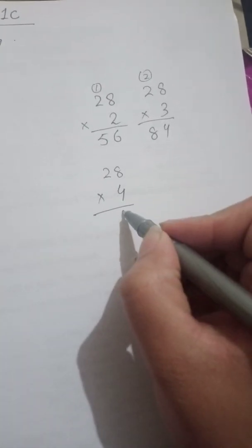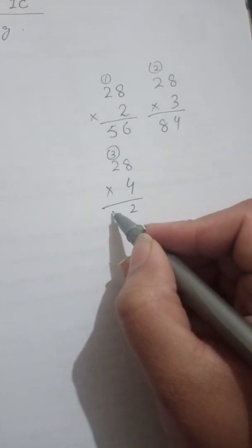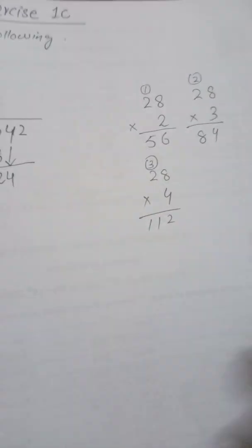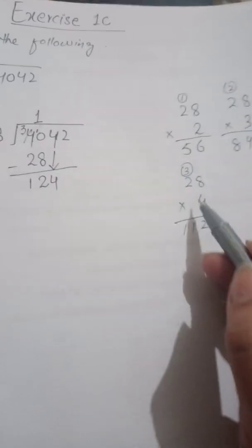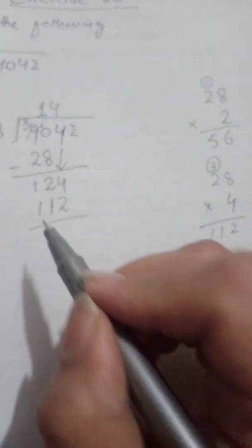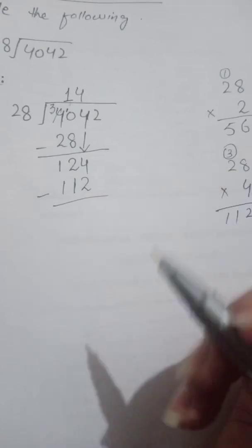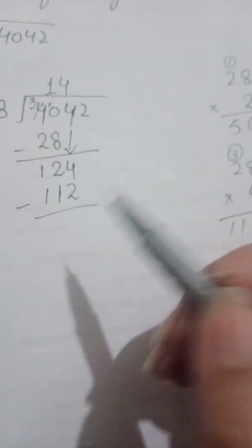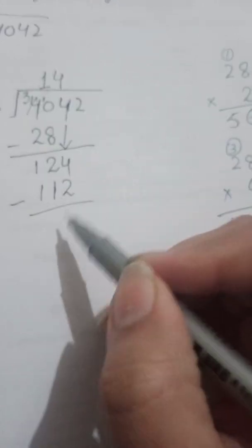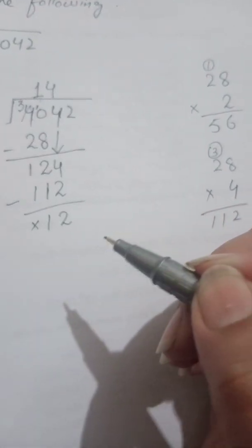We do rough work on the right side. 4 times 8 is 32, carry 3; 4 times 2 is 8, plus 3 is 11. So we get 112. We took 28 four times, giving 112, which is the nearest smaller number to 124. If we took 28 five times, it would exceed 124. So we take 4 times. Now the next step is to subtract: 4 minus 2 is 2, 2 minus 1 is 1, and 1 minus 1 is 0.